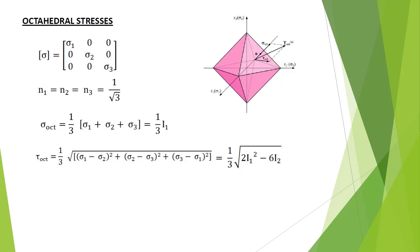Using Cauchy's formula, we obtain: sigma octahedral equals 1/3 of the first invariant I1, and tau octahedral equals (1/3) times the square root of (2 I1² minus 6 I2). Thank you.